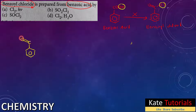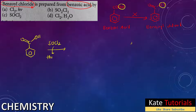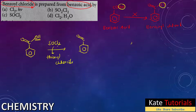Here I have -COOH — benzoic acid. To that if I add SOCl₂, which is thionyl chloride, I will directly get benzoyl chloride: C(=O)Cl. The -OH will go and one Cl will come in. This is the correct reagent.